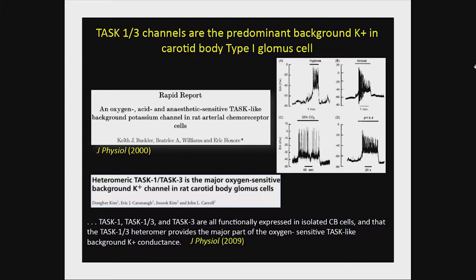TASK1 and TASK3 tandem-pore channels are the predominant background potassium conductance in the chemosensing cells of the carotid body — the type 1 glomus cells. Keith Buckler at the University of Oxford was the first to show this, identifying an oxygen-inhibited, acidic pH-inhibited, and anesthetic-activated potassium conductance in these cells. In current clamp records, with application of hypoxia, these cells become depolarized and fire action potentials — and the same is true for hypercapnia and acidic pH.